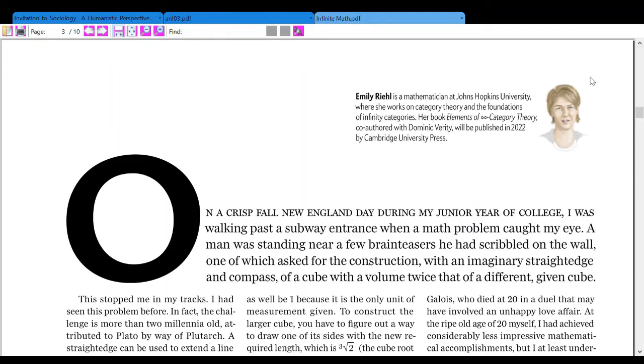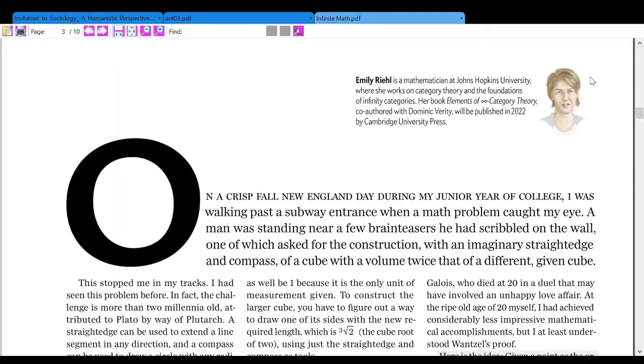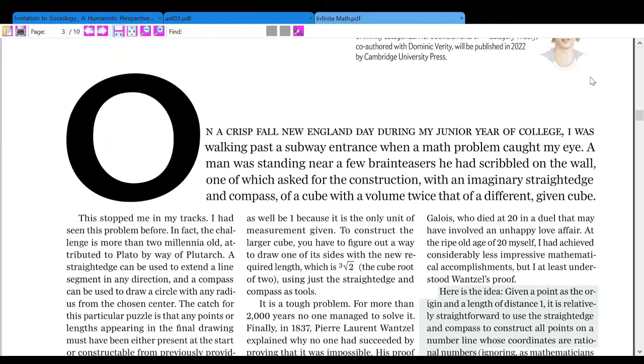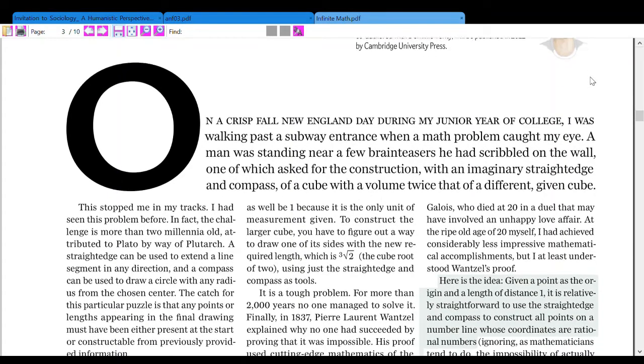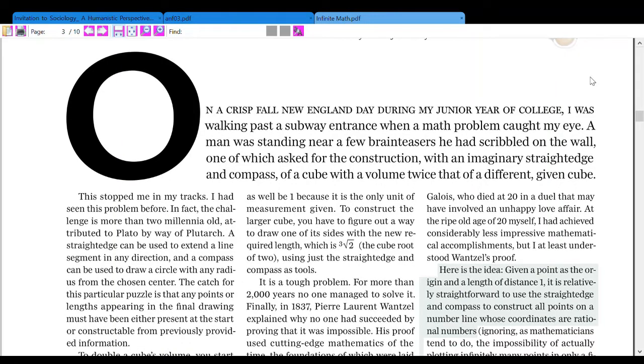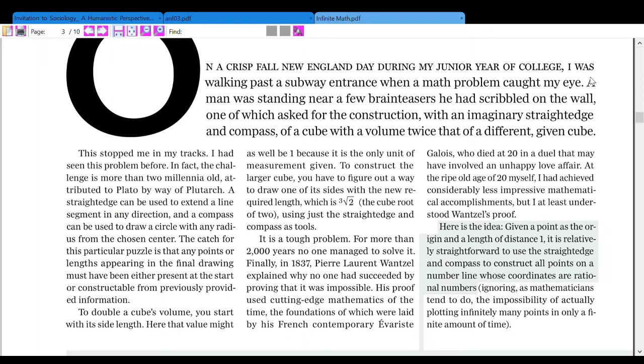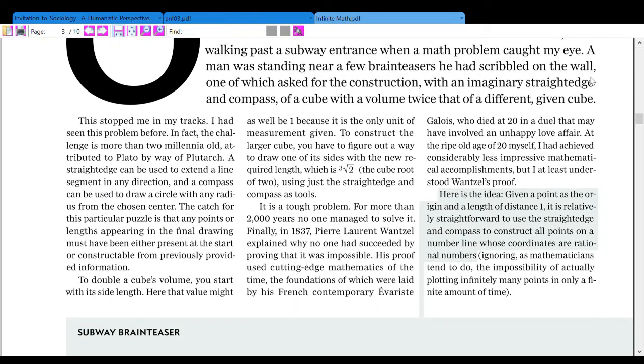I was walking past a subway entrance when a math problem caught my eye. A man was standing near a few brain teasers. He had scrawled on the wall, one of which asked for the construction with an imaginary straight edge and compass of a cube with a volume twice that of a different given cube. This stopped me in my tracks. I had seen this problem before. In fact, the challenge is more than two millennia old, attributed to Plato by way of Plutarch.